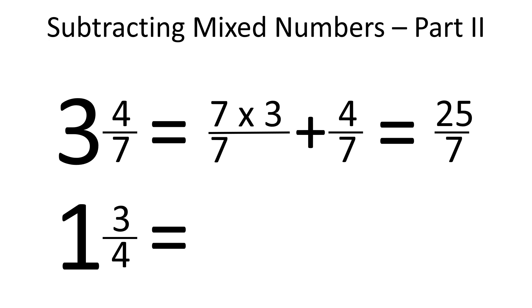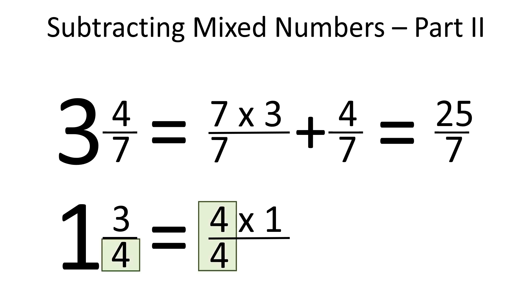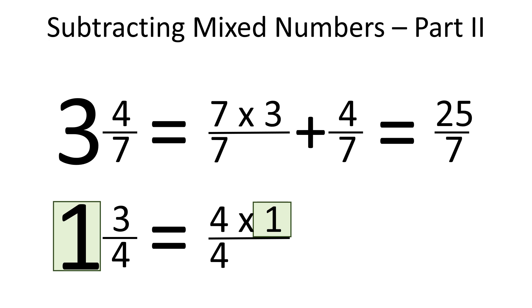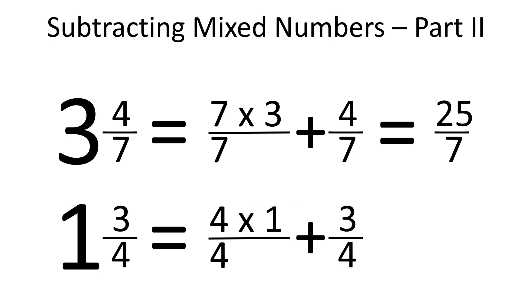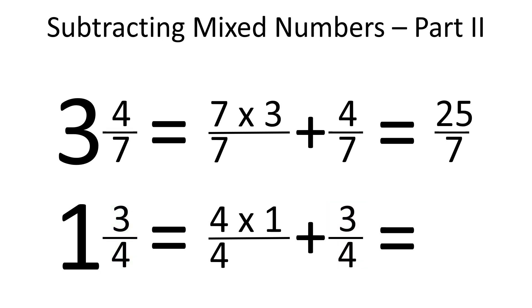Now let's do the same with 1 and 3 over 4. The whole was divided into 4 parts because there is a 4 in the denominator. So 1 whole is equal to 4 over 4. As we have 1 whole, we multiply the numerator by 1, then add 3 over 4. That way, we represented 1 and 3 over 4 as 7 over 4.